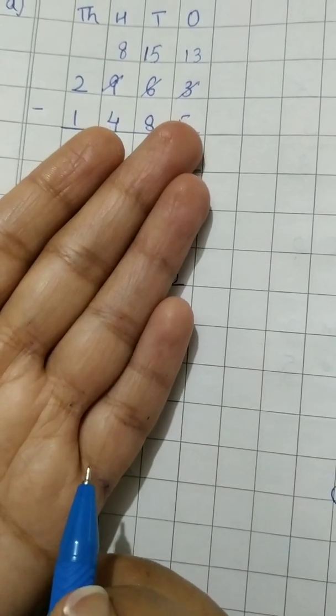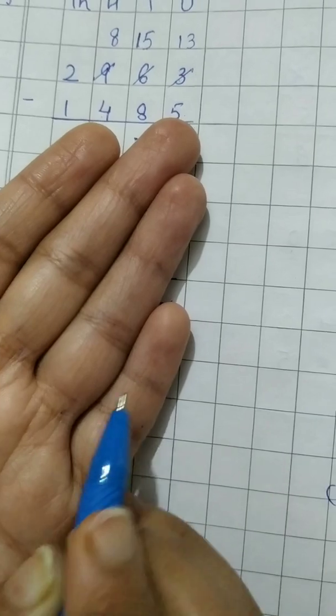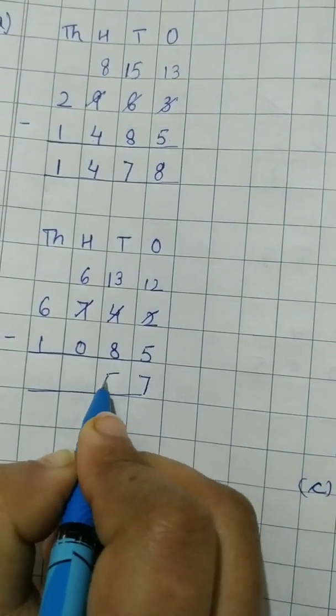Now we have to start with 9. 9, 10, 11, 12, 13. 1, 2, 3, 4, 5. 13 minus 8, 5.